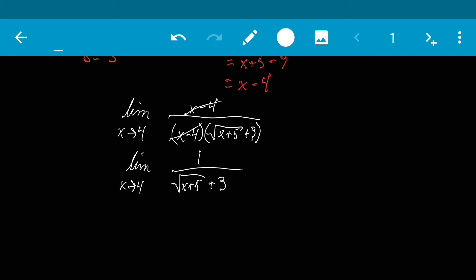So now we've reduced this down as far as we can. So now that we've gotten to this point, let's go ahead and put 4 in for x. So now we have 1 over the square root of 4 plus 5 plus 3, which that gives us 1 over the square root of 9 plus 3. Well, the square root of 9 is 3, so we end up with 1 over 3 plus 3, which gives us 1 over 6. And that is the answer to this limit problem.